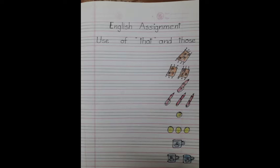Now let's do the worksheet. The first one is mat. What is that? That is a mat. We use the word that because there is one picture. Next one. What are those? Those are mats. We use the word those because there are two pictures.